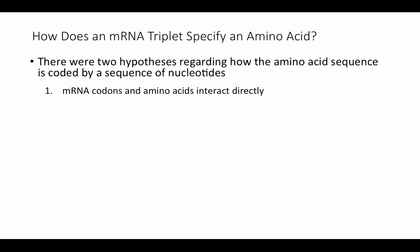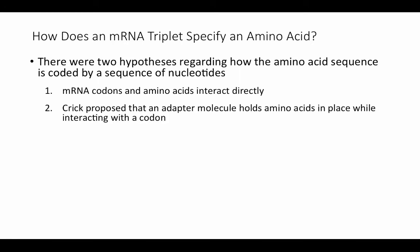Let's think about how we get from an mRNA triplet, or a codon, to an amino acid. Initially there were two hypotheses regarding how the amino acid sequence is coded by a sequence of nucleotides. One is the most direct: that mRNA codons and amino acids interact directly — there will be some physical contact between amino acids and particular codons on the mRNA, and they match up together directly.